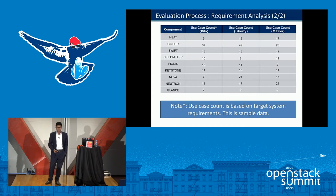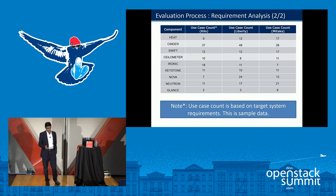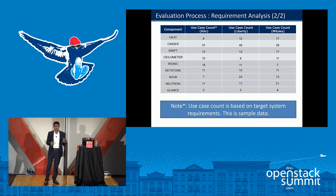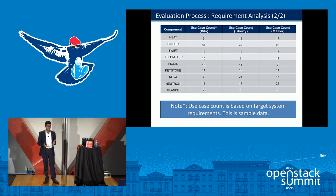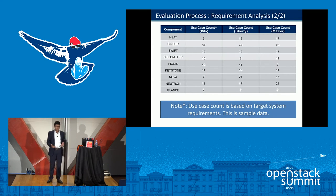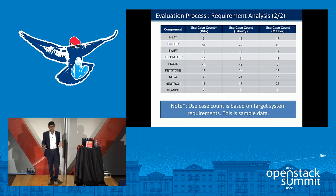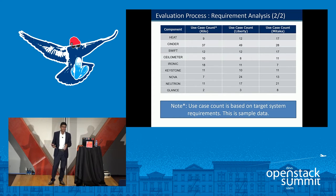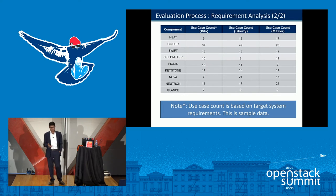In the evolution process, we track component and use case counts across releases. We evaluated the system across three consecutive releases. Use case count refers to applicable use cases for that system. For example, in the Kilo release we had nine use cases for Heat; when it moved to Liberty, we had twelve applicable use cases; and in the Mitaka release, the count increased from twelve to seventeen. This use case count is always based on the target system requirement.